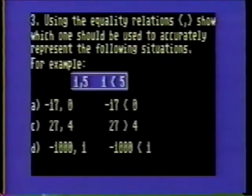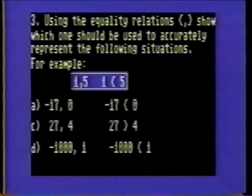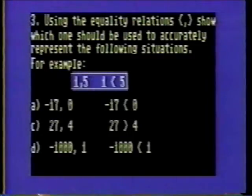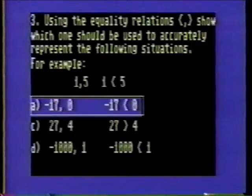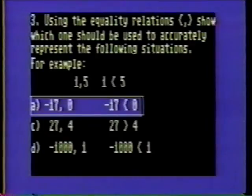Using the equality relations greater than and less than, show which one should be used to accurately represent the following situations. For example, one is less than five. In problem 3A, negative 17 is less than zero. Remember, negative numbers are always less than zero.